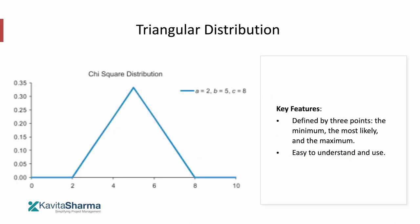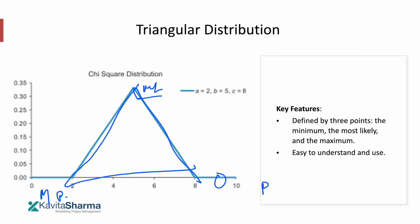Triangular distribution is defined by three points: minimum, most likely, and maximum — very simple. We use it in project management where we define a pessimistic scenario, an optimistic scenario, and a most likely scenario. To calculate the expected value in a triangular distribution: most likely plus pessimistic plus optimistic, divided by three. This gives us the probable duration or probable cost of a particular task or WBS item.